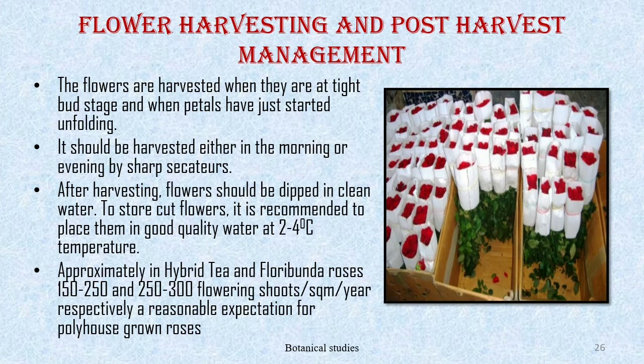Flower harvesting and post-harvest management: the flowers are harvested when they are at the tight bud stage and when petals have just started unfolding. They should be harvested either in the morning or evening using sharp secateurs. After harvesting, flowers should be dipped in clean water. To store cut flowers, it is recommended to place them in good quality water at 2 to 4 degrees Celsius. In hybrid tea and floribunda roses, 150 to 250 and 250 to 300 flowering shoots per square meter per year respectively is a reasonable expectation from polyhouse-grown roses.